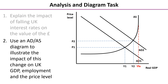We can also see that at the original position at Y1, the distance between Y1 and Yfe would have been the negative output gap — the difference between actual output and the economy's productive potential. After interest rates have fallen, the distance between Y2 and Yfe is much smaller, so the negative output gap has got a lot smaller.